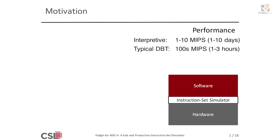A much more sophisticated technique is DBT, dynamic binary translation. DBT basically dynamically translates target instructions into host instructions, therefore amortizing the fetch and decode overhead for many target instructions. These typically get hundreds of MIPS, reducing the simulation time to only a couple of hours.